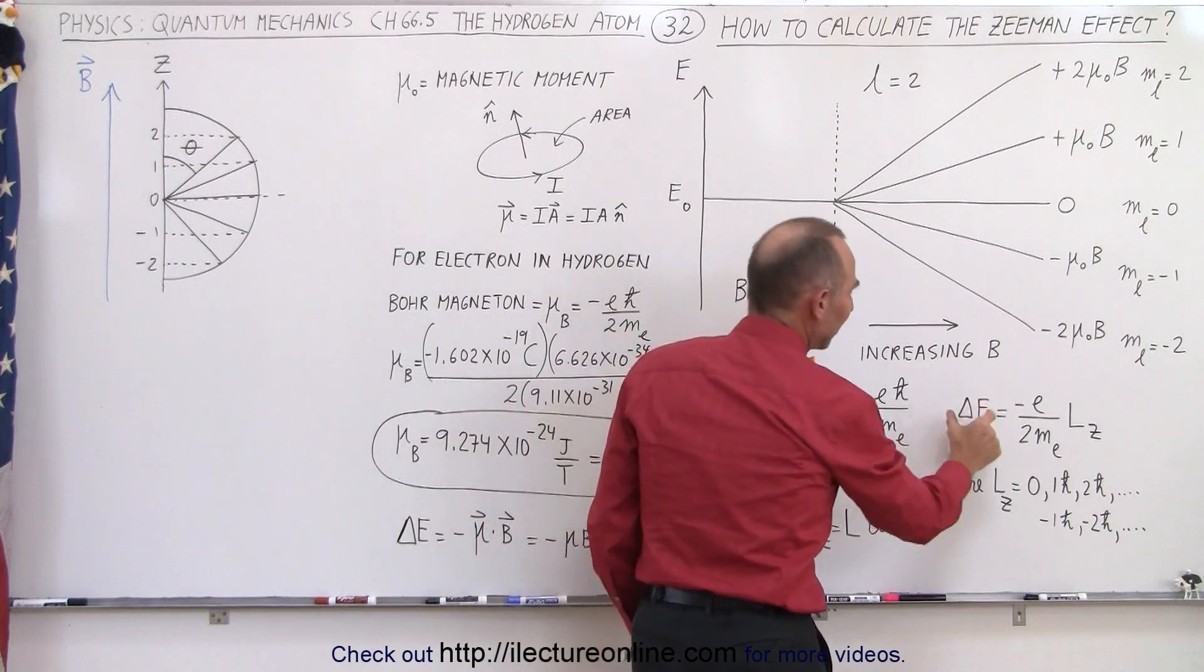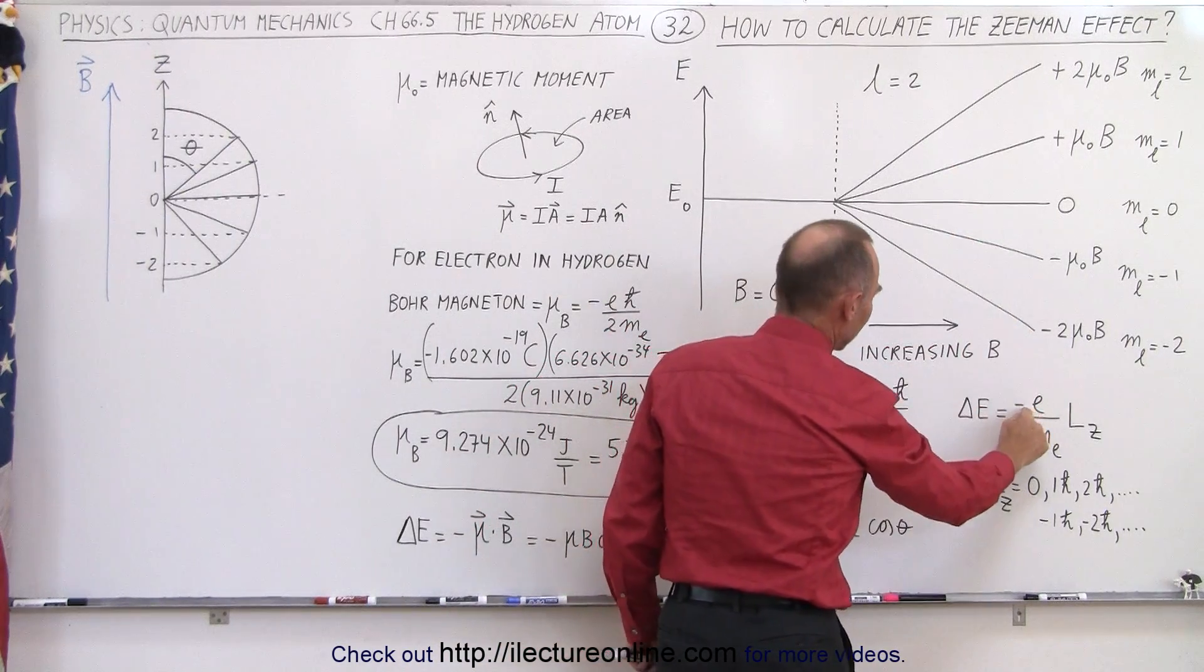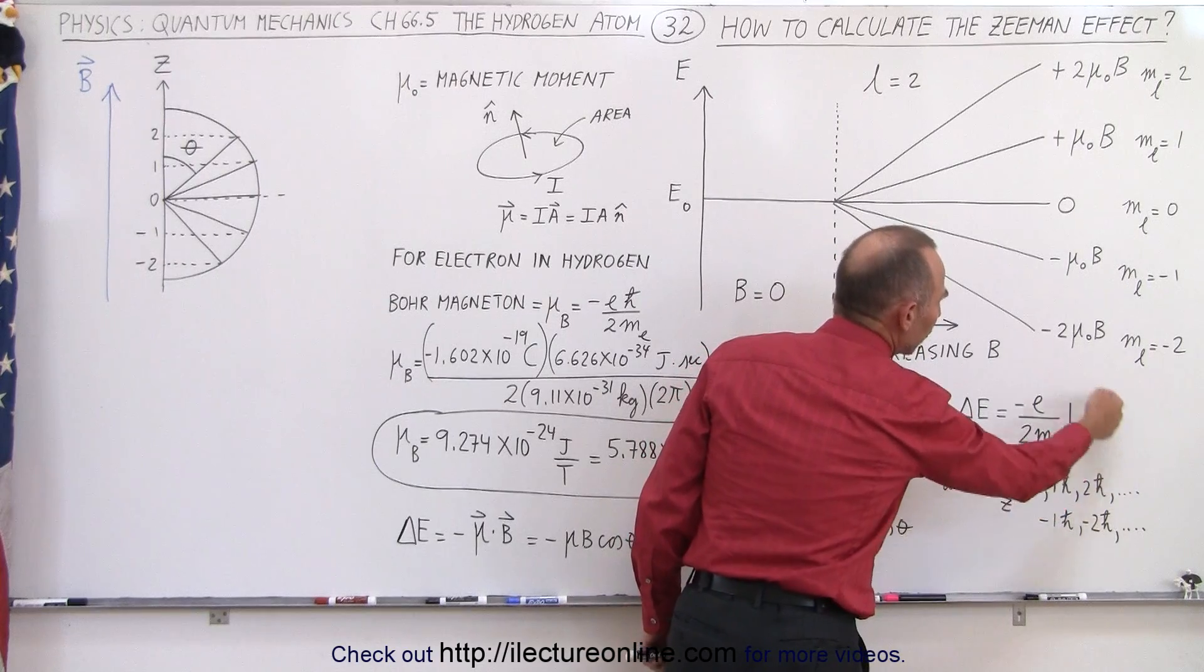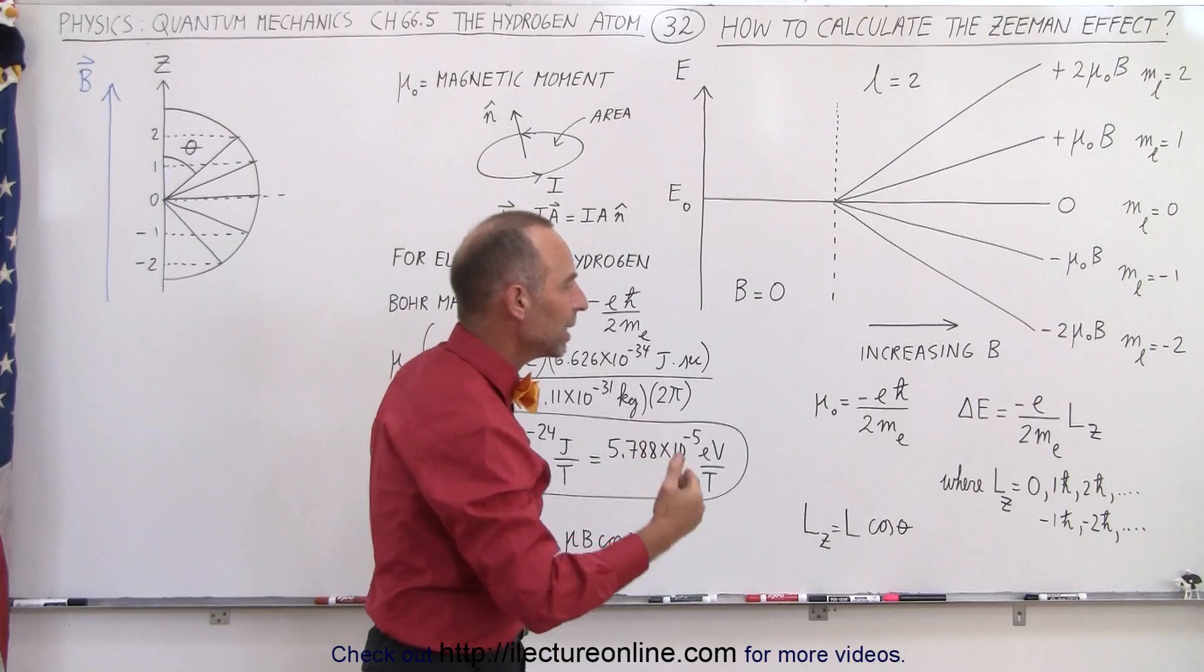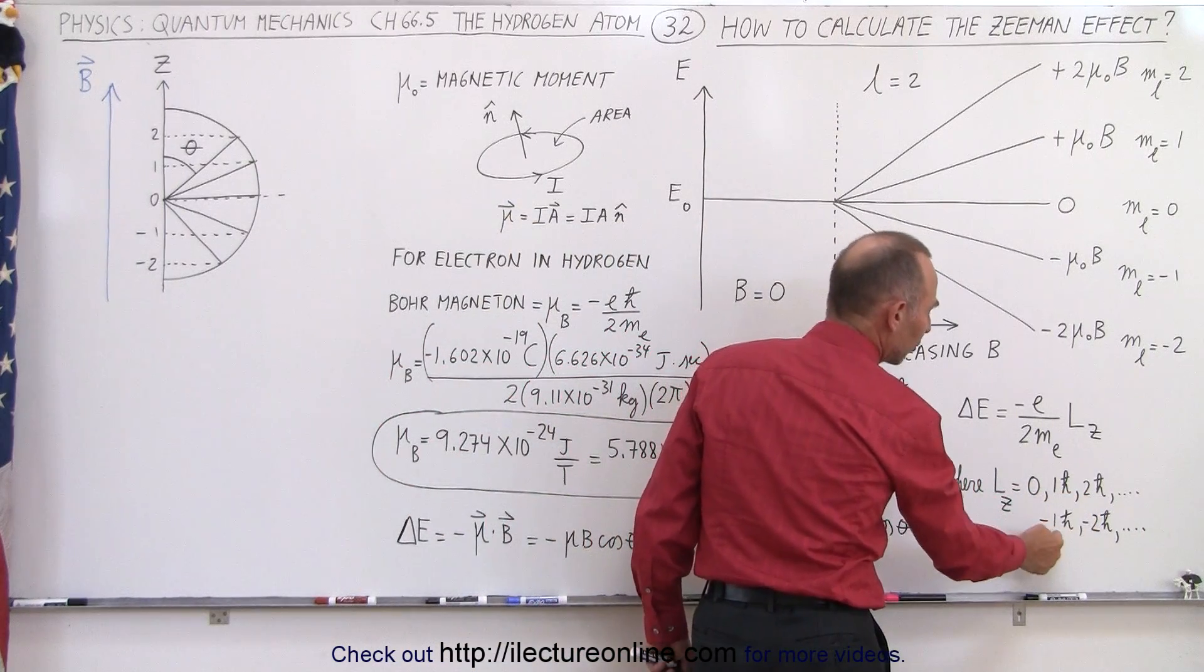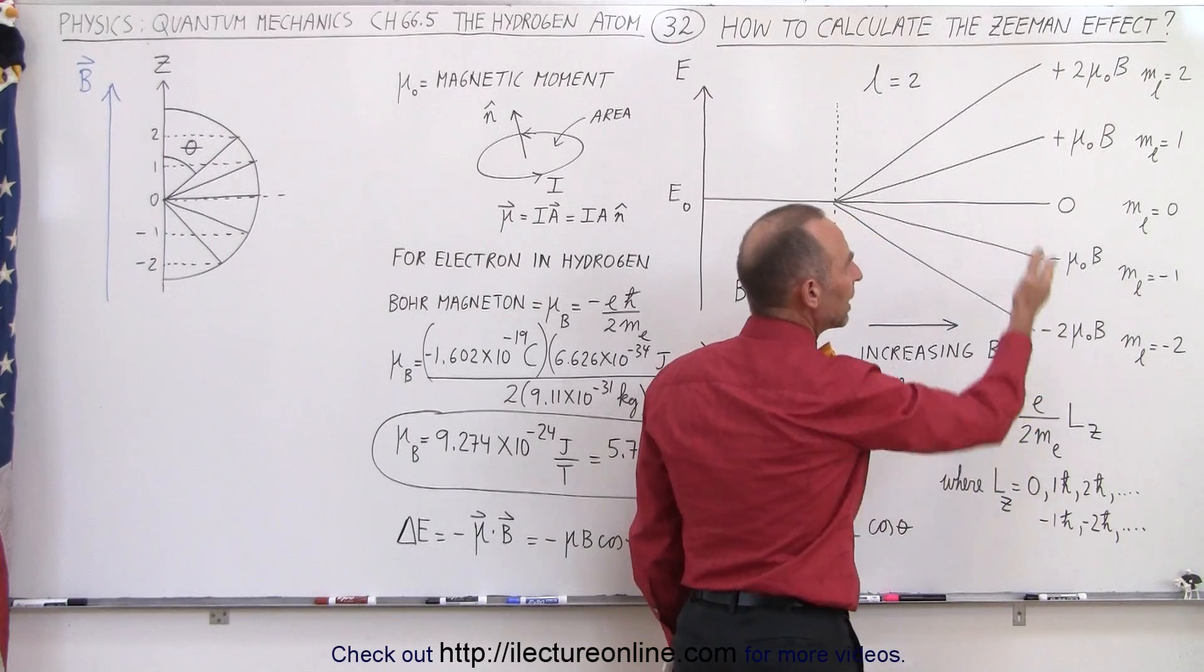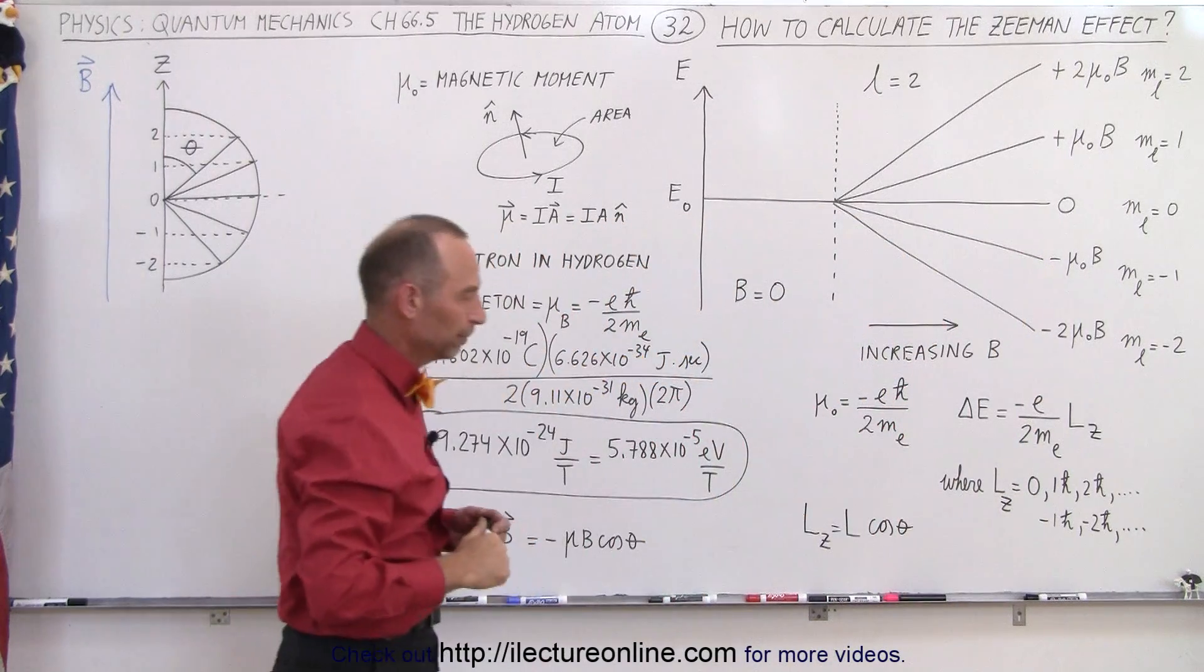We can also write that the difference in the energy is equal to minus E divided by 2M sub B, the mass of the electron, times L sub Z. That's the angular momentum of the electron, and it can be 0, 1H bar, 2H bar, or 0, minus 1H bar, minus 2H bar, depending upon the value of the orbital magnetic quantum number.